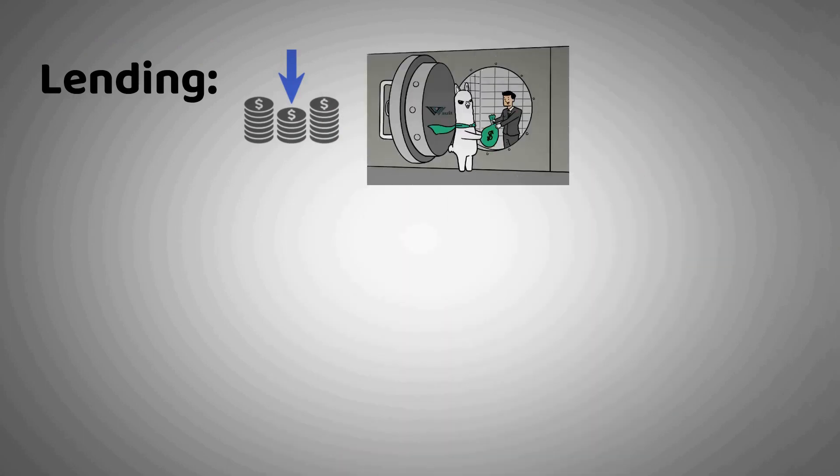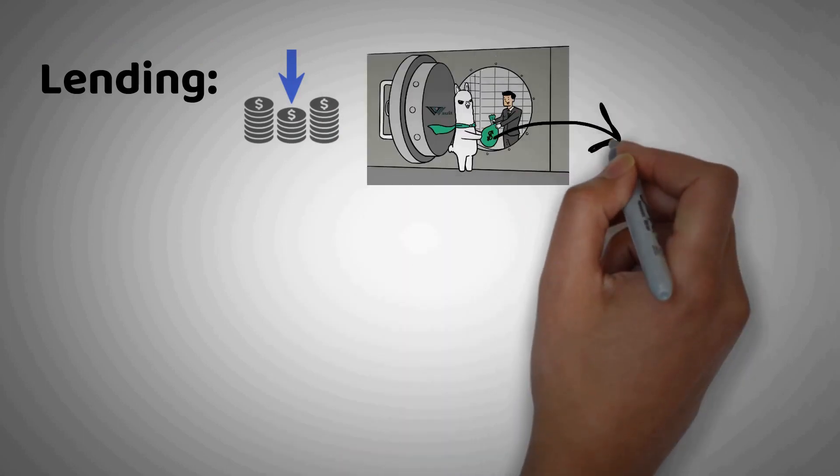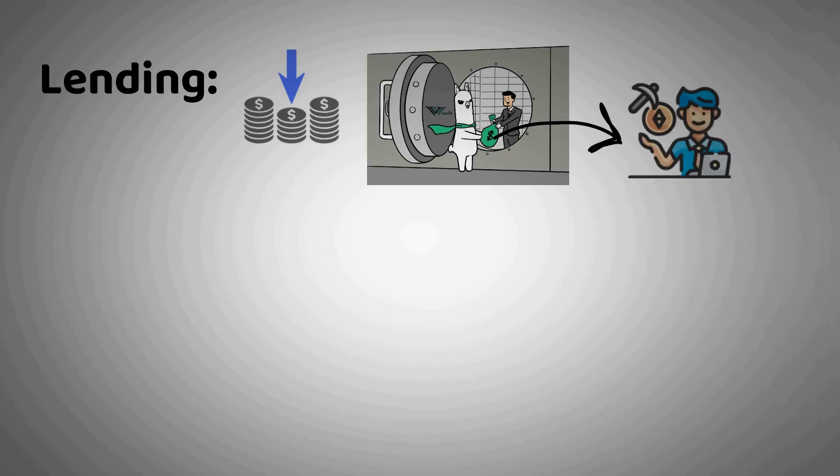Lending. Alpaca allows lenders to earn interest by depositing assets into their prospective vaults. These assets are then offered to levered yield farmers as under-collateralized loans that can only be used on the platform. In exchange for supplying assets, lenders receive a corresponding balance of pool-specific interest-bearing tokens. Alpaca uses these ibTokens to track deposited funds and their accrued interest, which is expressed by the ibToken's exchange rate.